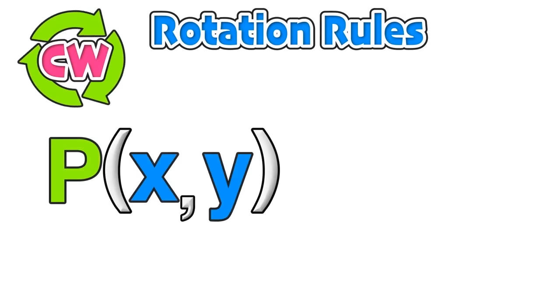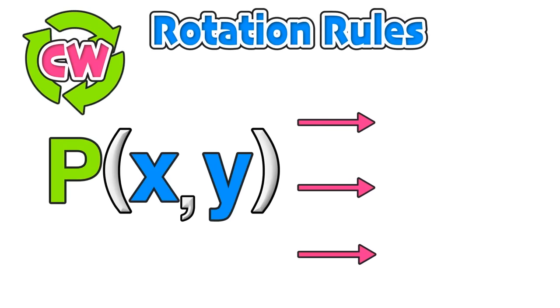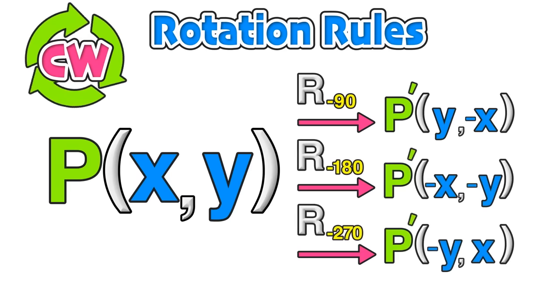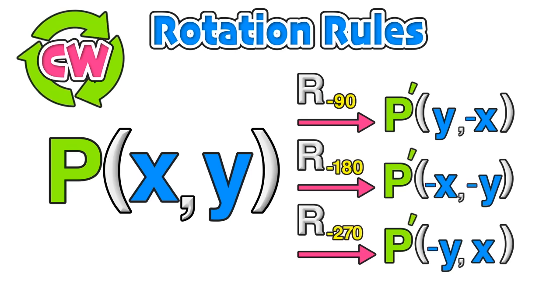Just as we had rotation rules for counterclockwise rotations, we have another set of rules for clockwise rotations. For any point P with coordinates (x, y), we have a set of rules for negative 90, negative 180, and negative 270 degrees. Again, those negative signs just mean to negate or to switch the sign.